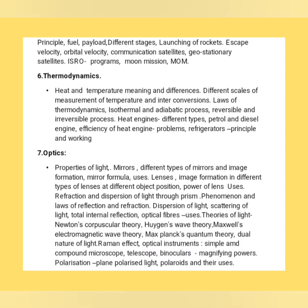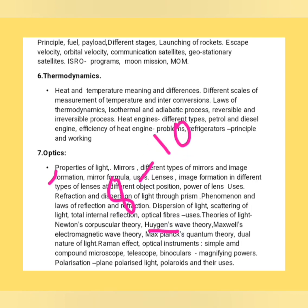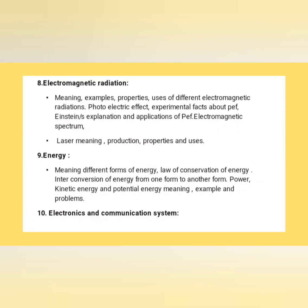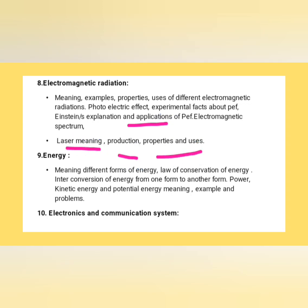Most optics concepts are from 8th to 10th standard textbooks, but higher-level concepts require 1st and 2nd PU textbooks. Moving to electromagnetic radiation: meaning, examples, properties and uses of different electromagnetic radiations, photoelectric effect, experimental facts, Einstein's explanation and applications, electromagnetic spectrum, and laser — meaning, production, properties and uses. Even though it is a short chapter, there will definitely be questions from electromagnetic radiation.